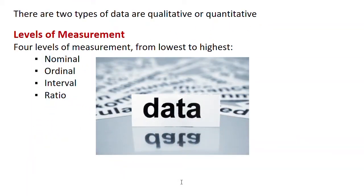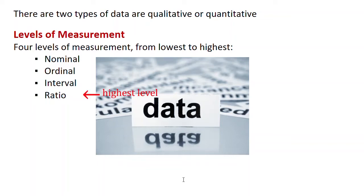To summarize: there are two types of data — qualitative and quantitative — and four levels of measurement from lowest to highest. We go from nominal, which is qualitative only, to ordinal, which is qualitative or quantitative, to the two highest: interval and ratio. Ratio is the highest because it has an inherent zero.